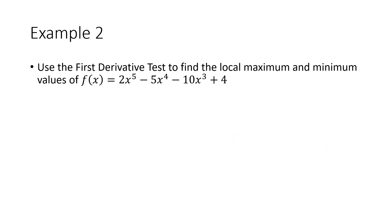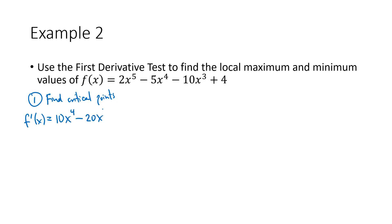Let's do another one — a little more complicated, but the same basic process. First step: find the critical points. We take the derivative: 2x to the fifth gives 10x to the fourth; 5x to the fourth gives 20x to the third; 10x cubed gives 30x squared; the derivative of four is zero. It's a polynomial so it's never undefined — we just set it equal to zero and solve.